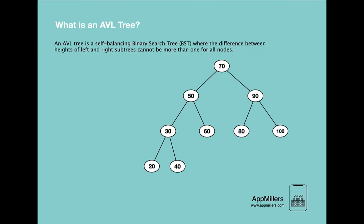From this definition you can easily see that an AVL tree is also a type of binary search tree, and this means that all properties of a binary tree are applicable for AVL trees also. This means that the left child will be smaller than the root node and the right child will be bigger than the root node, and this recursively applies to all nodes.